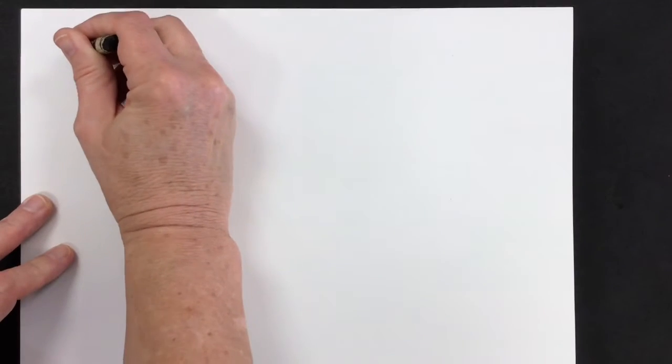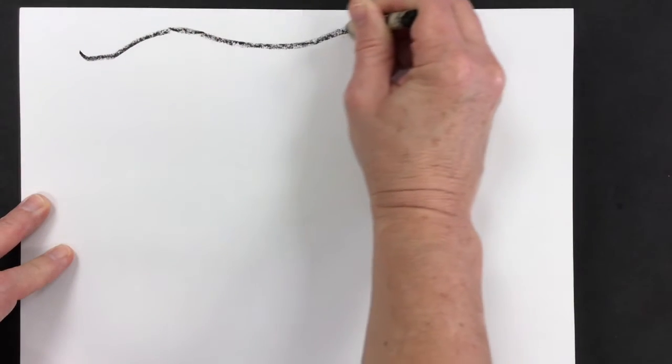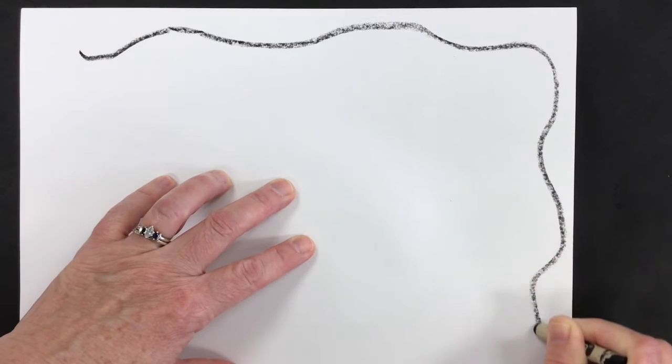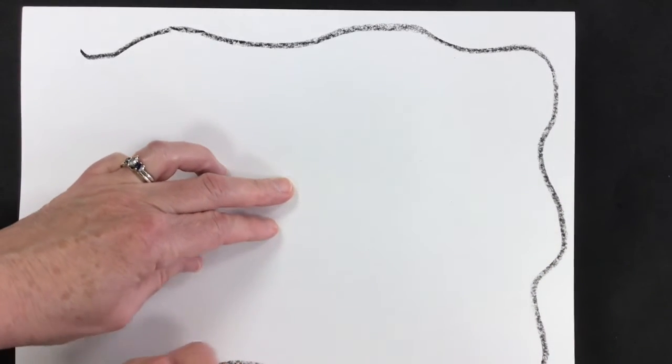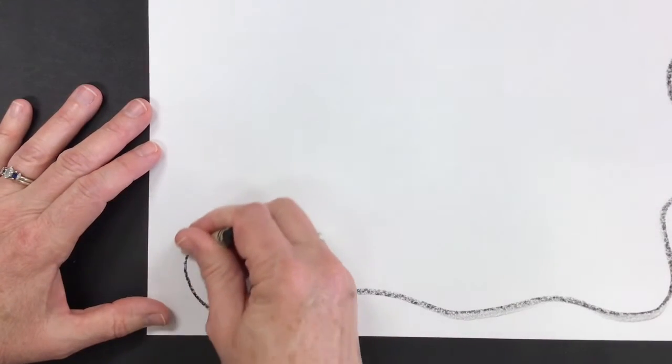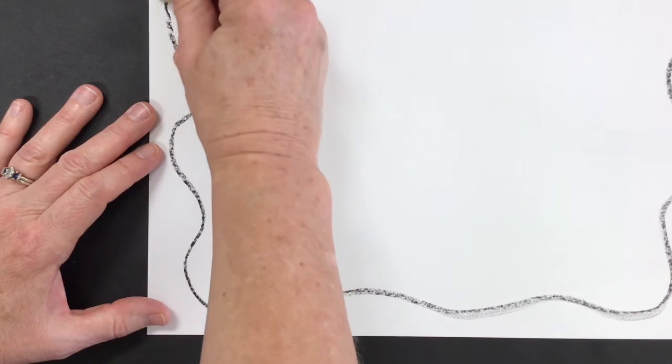You're gonna take your black crayon and by the edge you're gonna make a wavy line that's gonna go all the way around your entire paper so that it will look like that part is the buckskin, like the skin from the deer.